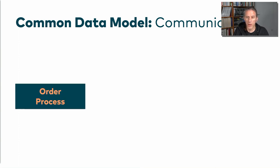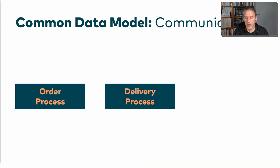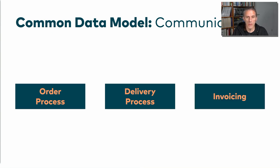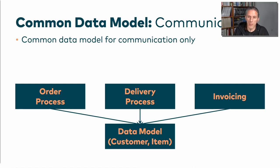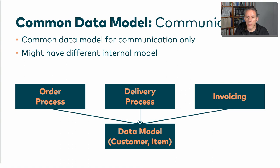Let's start off with some microservices. We have one for order processing, another one that takes care of delivery, and one that writes invoices. It seems to make sense to come up with a common data model for those common business objects such as a customer or an item, used for communication only — because in the database, of course, there will be different databases for each of these microservices. We can also have a different internal model in each microservice.